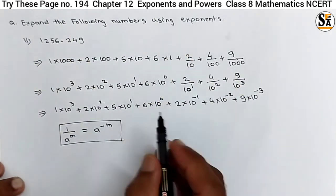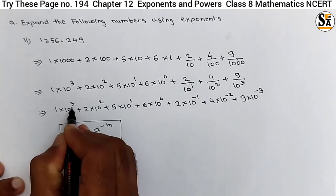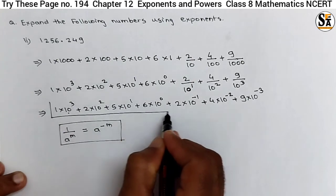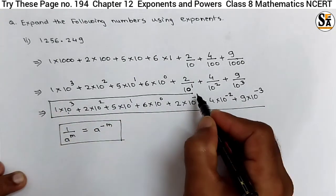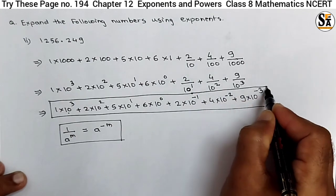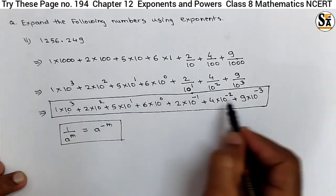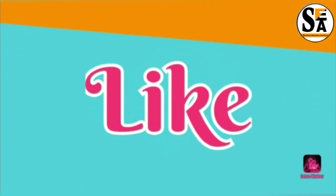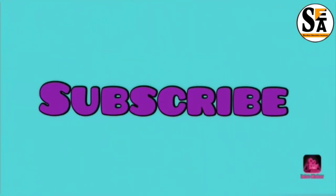So this is the way to express any number using exponents, where 10 is the base and the power is the exponent. This is our final answer — the number 1256.249 expressed using exponents. This is all for this video. We will meet again in our next video. Do learn, do enjoy. Thank you.